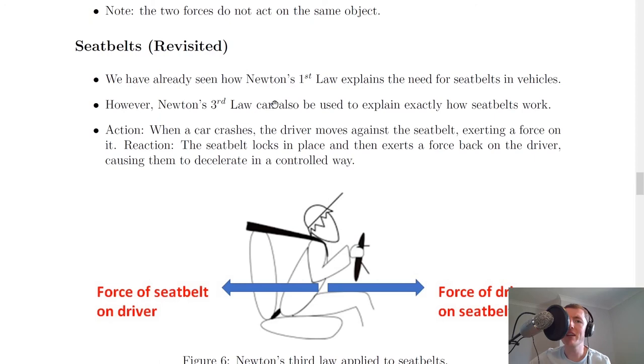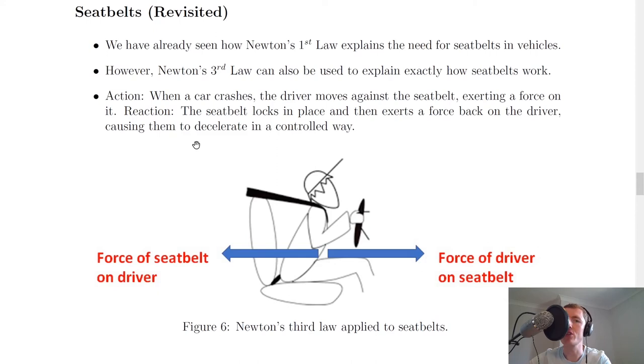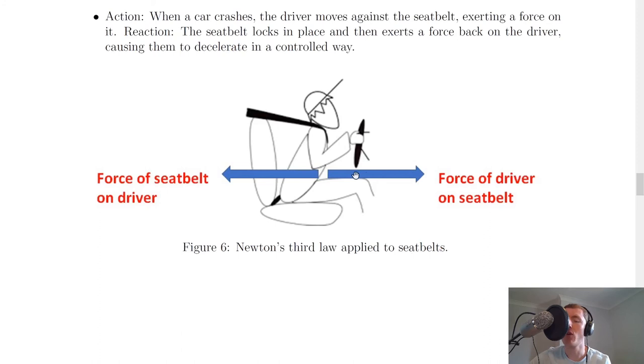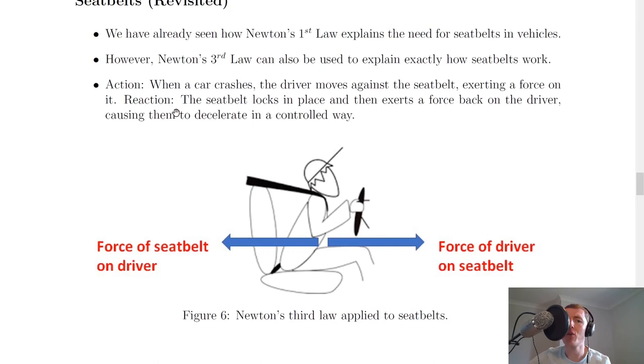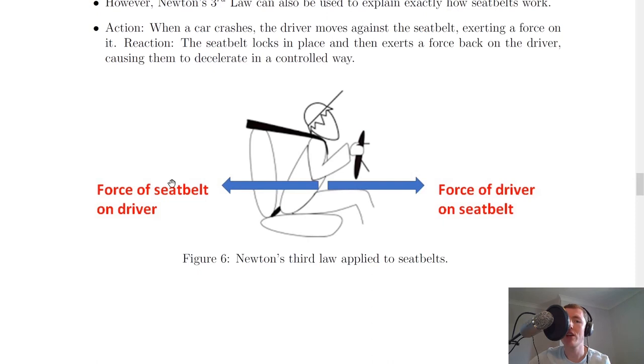So as an example we're going to revisit seat belts which we looked at for Newton's first law earlier, and it says here we have already seen how Newton's first law explains the need for seat belts in vehicles. However Newton's third law can also be used to explain exactly how seat belts work. So you should remember that when we're talking about Newton's third law for a certain scenario, we need to talk about the action force and the reaction force, i.e. our Newton pair of forces for a situation. So in this case our action force is when a car crashes the driver moves against the seat belt, exerting a force on it. So in this picture it's the force to the right, so the force of the driver on the seat belt when the car crashes.